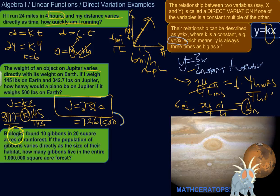All right, one more. I should say biologists. Biologists found 10 gibbons. That's a kind of ape. Actually, my favorite kind of ape. I'm really into gibbons right now. They're small, but they can do flips and stuff. Biologists found 10 gibbons in 20 square acres of rainforest. If the population of gibbons varies directly as the size of their habitat, how many gibbons live in the entire 1 million square acre forest?